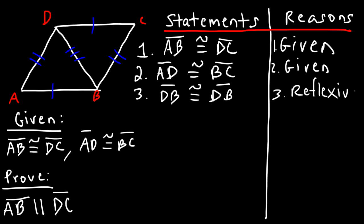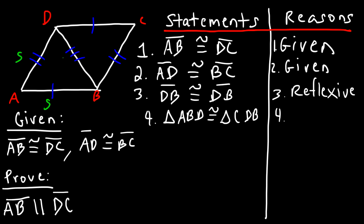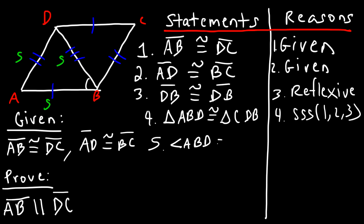Statement 4: triangle ABD is congruent to triangle CDB. The reason is the SSS postulate, using statements 1, 2, and 3. Statement 5: angle ABD is congruent to angle CDB — that angle here and that angle there — and the reason for that is CPCTC (corresponding parts of congruent triangles are congruent).